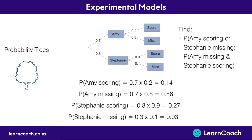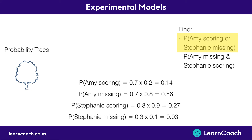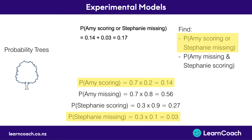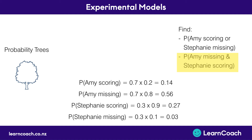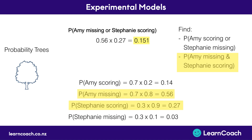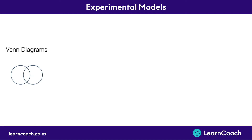This hasn't answered our question yet. We're trying to find the probability of Amy scoring or Stephanie missing, so we add those probabilities together: 0.14 plus 0.03, which gives us 0.17. Now for the probability of Amy missing and Steph scoring, this is an intersection, so we multiply: 0.56 times 0.27, which equals 0.151.